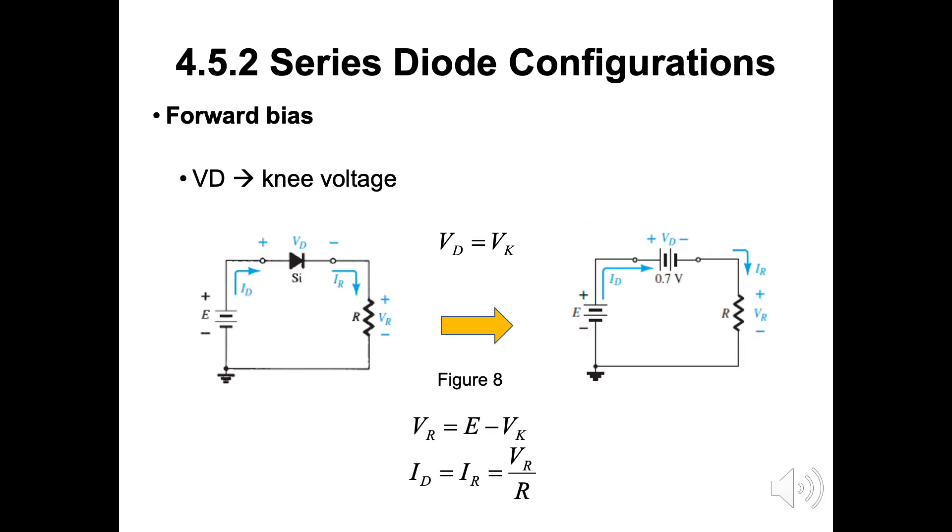Diode has two general types of bias. Firstly, is the forward bias diode. In forward bias diode, we can substitute the equivalent model for the on-state diode. The VD here is equal to the knee voltage or VK. As example silicon is 0.7V. From the left-hand side figure 8, as the forward bias has been applied in the circuit, we can redraw the left one to the right-hand side of figure 8. Apply the KVL, VR is E minus VK. As in serial circuit, ID and IR would be the same value. So, the ID is equal to VR by R.